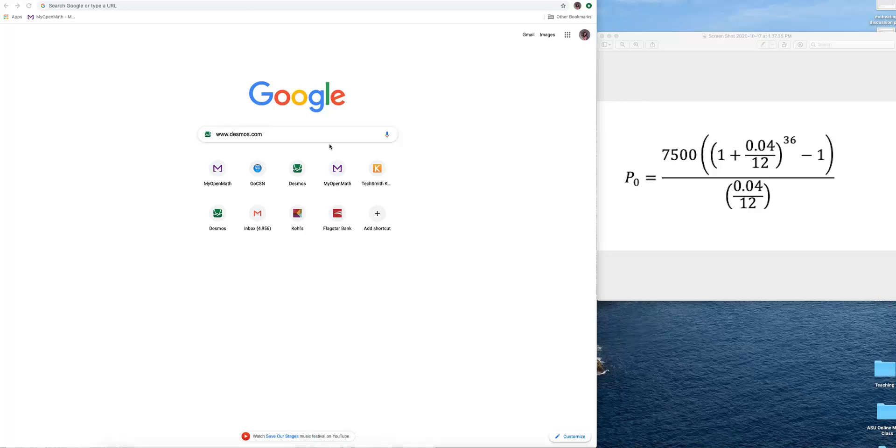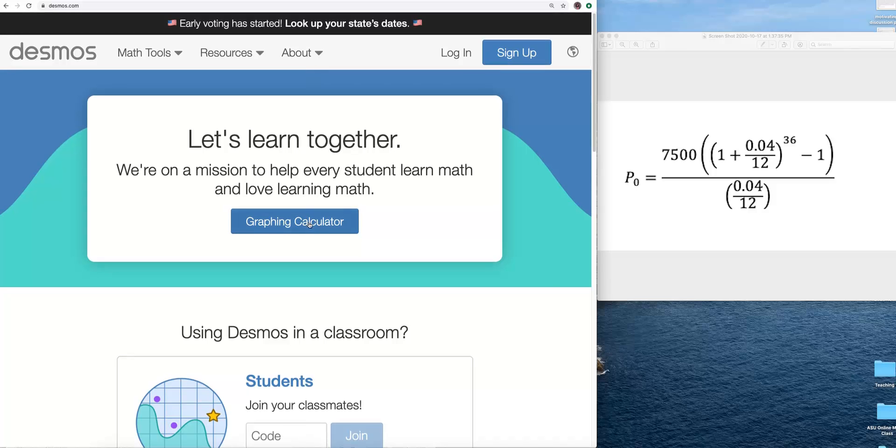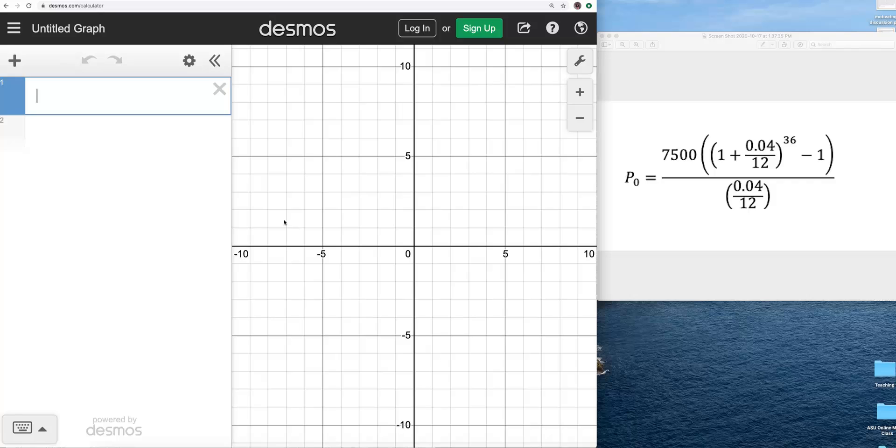To begin, I'm going to type in my search bar www.desmos.com and I'm going to search. When I do, a new window is going to appear, and I'm going to click right here where it says graphing calculator. Voila! We have a window.